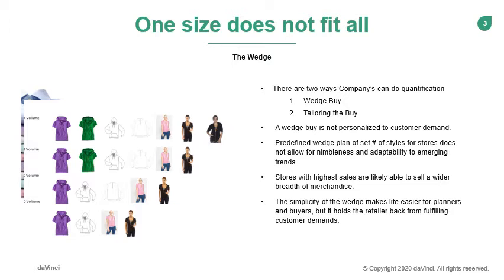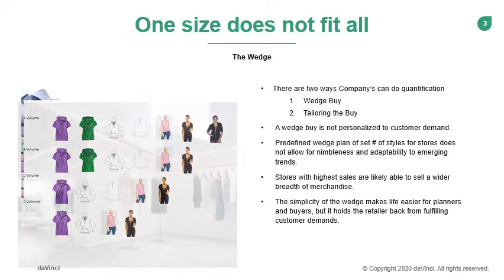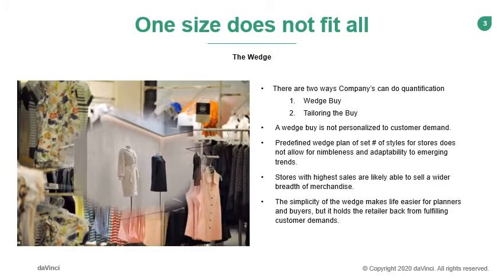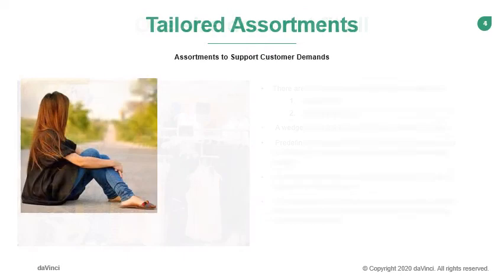If an emerging trend doesn't fit the predefined buy, then the entire plan needs to be reworked. The wedge forces the retailer to plan the same assortment for all stores within a cluster, even though there could be a variation in customer preferences between stores. The result becomes a number of one-size-fits-all assortments, leaving stores destined to be under or overstocked and the retailer failing to realize the margin potential.